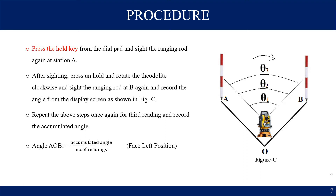You have to rotate clockwise to sight ranging rod at station B, and the angle is measured as theta 2, then press hold. Repeat this step again and take value theta 3. The final angle A-O-B for face left will be theta 3 divided by the total number of readings, which is 3.